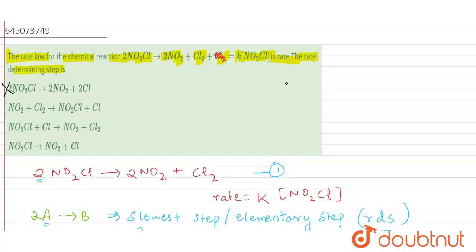Here we have NO2 plus Cl2 giving NO2Cl plus Cl. So this is also incorrect. In this we have NO2Cl plus Cl giving NO2 plus Cl2. This is also incorrect. In the last option, we have NO2Cl giving NO2 plus Cl. So this option will be the correct answer for this question. Thank you.